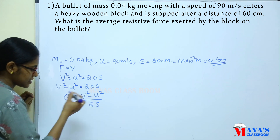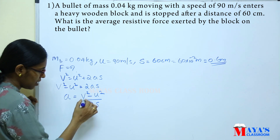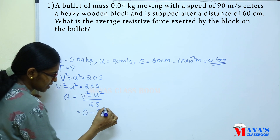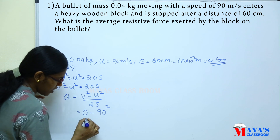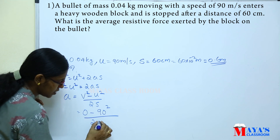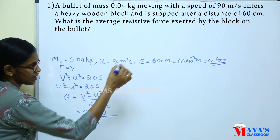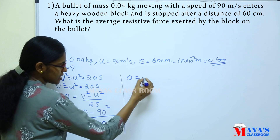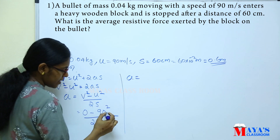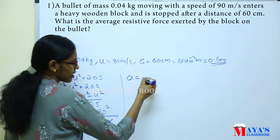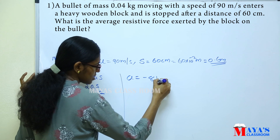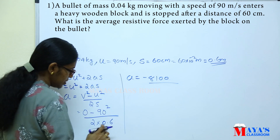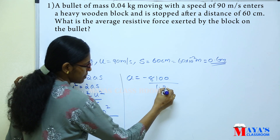The final velocity v is 0 and the initial velocity u is 90 m/s. So acceleration a = (0² − 90²) / (2 × 0.6) = −8100 / 1.2.